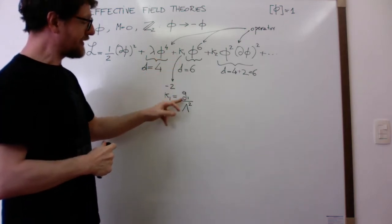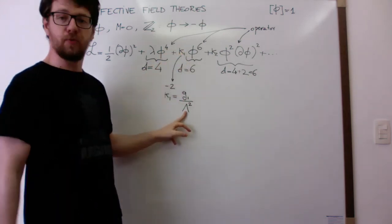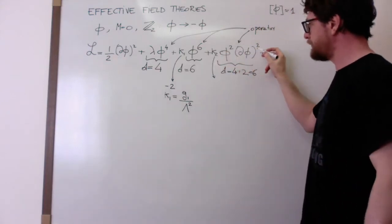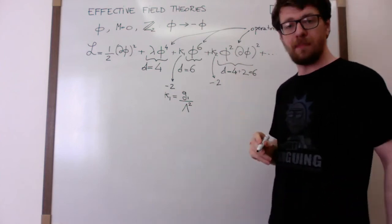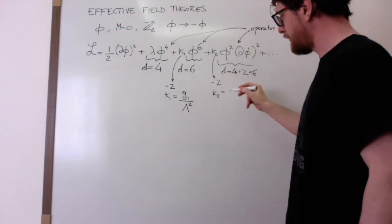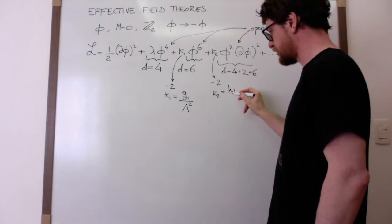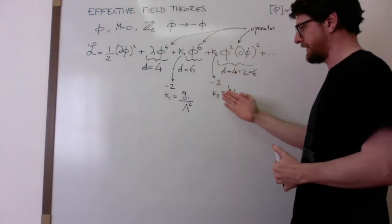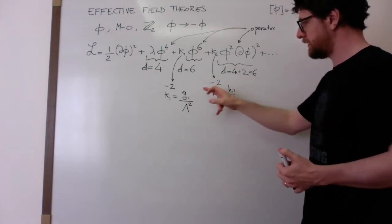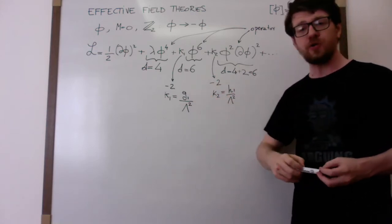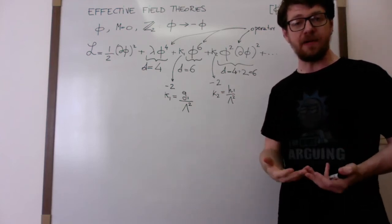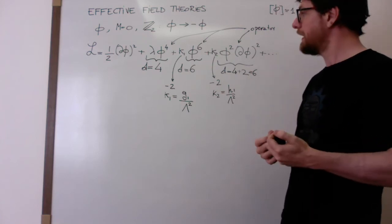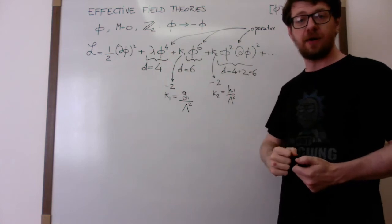Dimensional analysis tells us that this interaction should be suppressed by two powers of the maximum energy of validity of the theory. I'm going to show you now that whenever we consider amplitudes in Feynman diagrams and go to energies much lower than the cutoff, only a finite set of these operators are important. The idea is precisely like the electrostatic multipole expansion: as we go to long distances from the source, only a few terms are important.